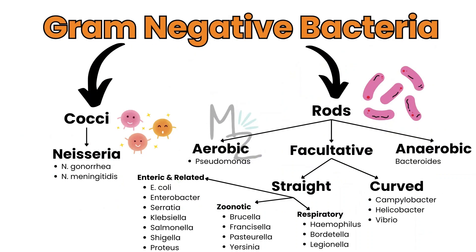Gram-negative bacteria are further subdivided into cocci — for example Neisseria, including Neisseria gonorrhoeae and Neisseria meningitidis — and also into rods, which are further subdivided into aerobic like Pseudomonas, anaerobic like Bacteroides, and facultative. Facultative are further subdivided into curved, which include Campylobacter, Helicobacter, and Vibrio — which includes Vibrio vulnificus, the topic of today's video.